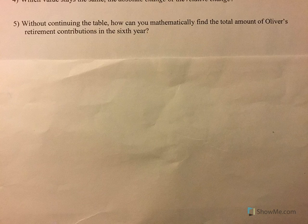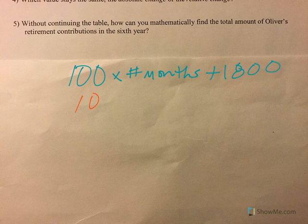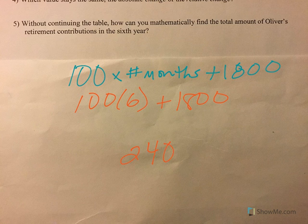Without continuing the table, how can we mathematically find the total amount he'll have in the sixth year? We take $100 multiplied by the number of years — because every year the increase is $100 — but we also had that initial $1,800. So for the sixth year: 100 times 6 plus 1,800, which gives us $2,400.